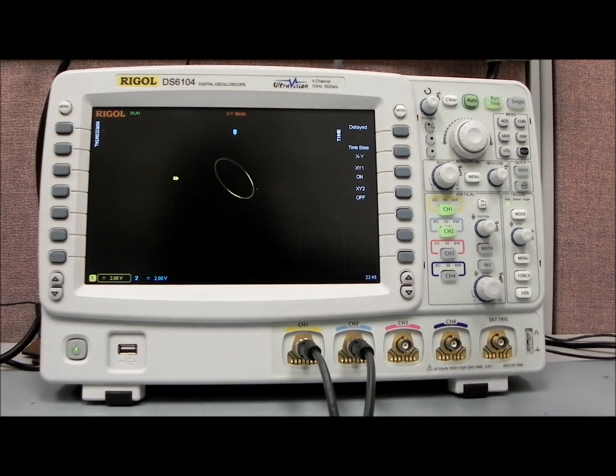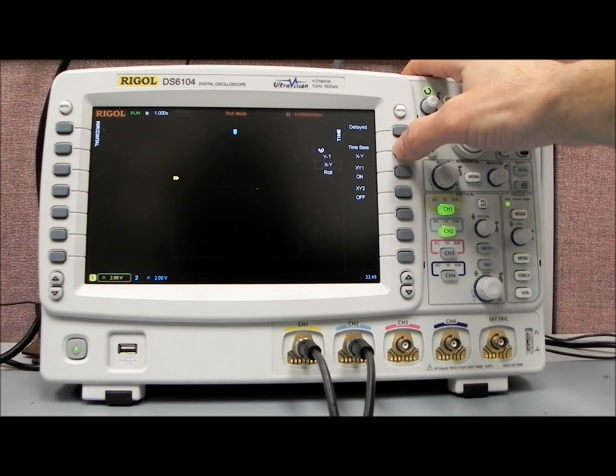An easier way of measuring the phase differential, though, is actually to go back to Y versus T mode, because we have such a strong digital engine.